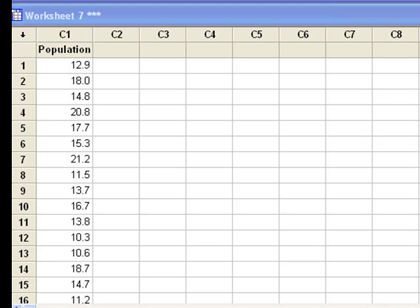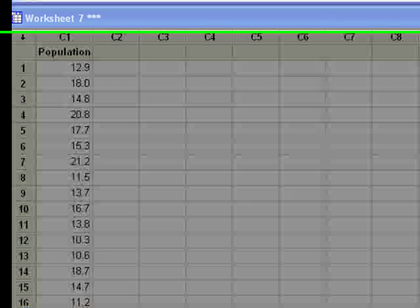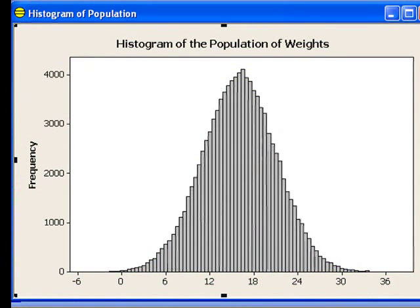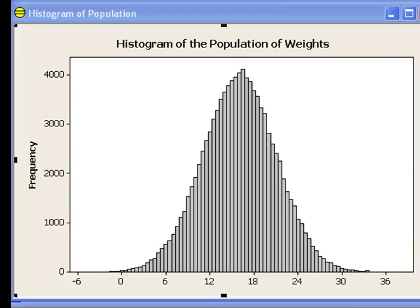Let's produce a histogram of all these values. This histogram represents our population. Does this picture make sense to you? Think about how you would interpret this graph. Pause here to think about this.